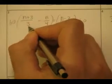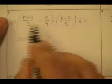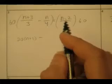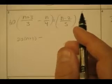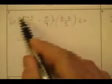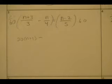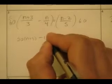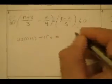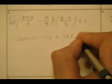Multiply both sides by 60. Well, 60 over 3 is 20. So I end up with 20 times (N plus 3) minus... 60 over 4 is 15. 60 over 5 is 12. 12 times (N minus 2). I apologize, my brain gets toasted once I do lots of problems.